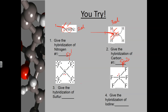For example three, the sulfur has five electron domains, so counting S, p1, p2, p3, d — that is Dsp3. For example four, there are six electron domains: S, p1, p2, p3, d1, d2 — giving D2sp3 hybridization.